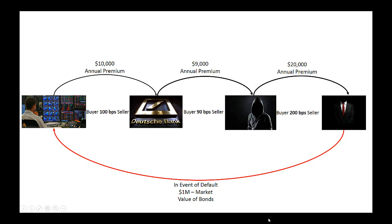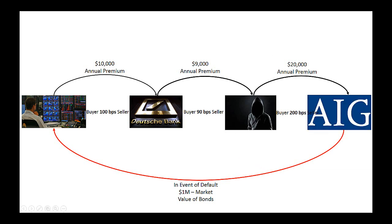One of the problems was a lot of opaqueness in the market — we didn't know who these entities were. When the dust settled, we found out it was companies like AIG who were actually on the hook. It created big problems because an investor thought they had entered into a contract with Deutsche Bank, but because of the cascading of these contracts, it was actually AIG on the other side. AIG buckled under the pressure — on the hook for billions of dollars of notional value CDS contracts, sustaining billions in losses. The US government had to step in; otherwise they weren't going to be able to make payments to investors who thought they were protected.